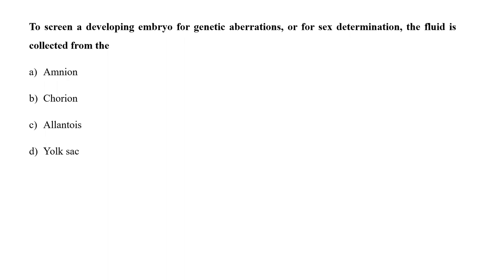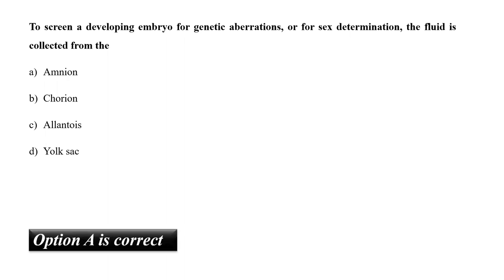To screen a developing embryo for genetic aberrations or for sex determination, the fluid is collected from A. Amnion, B. Chorion, C. Allantois, or D. Yolk sac? The process of screening a developing embryo is called amniocentesis. In this process, the amniotic fluid is extracted by a needle through the uterus through the amniotic sac. So the correct answer is option A, amnion.